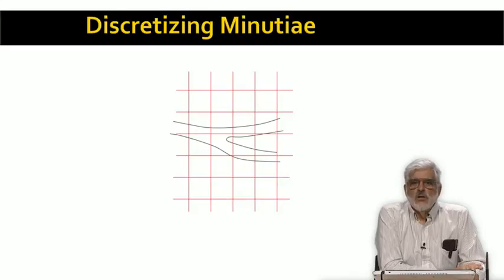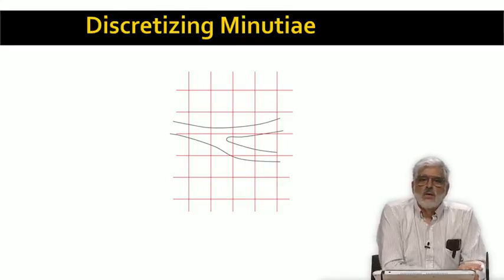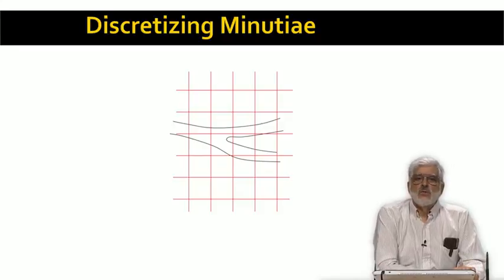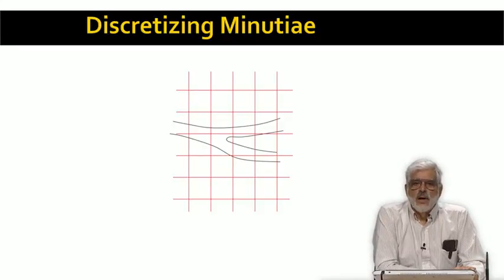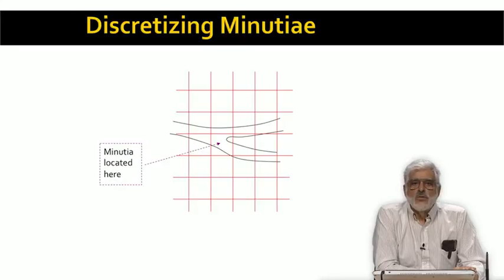Before proceeding to the solution, here's a picture of what minutiae look like. This is a case where two ridges merge into one, and the entire fingerprint has been overlaid with a grid. It appears the point of merger lies within this grid square, so we add that square to the set representing the fingerprint.